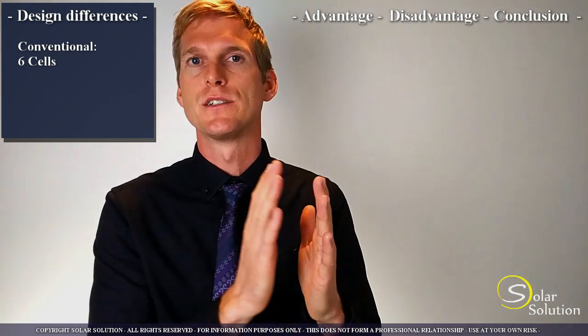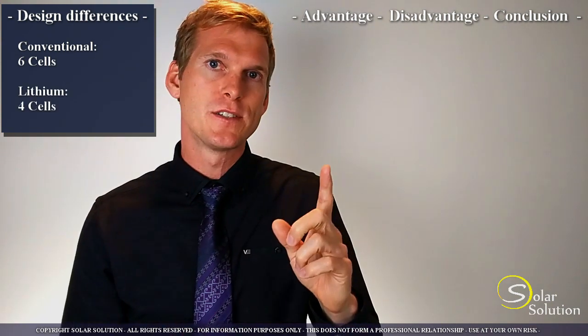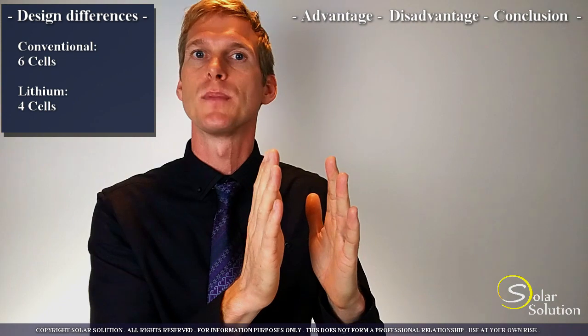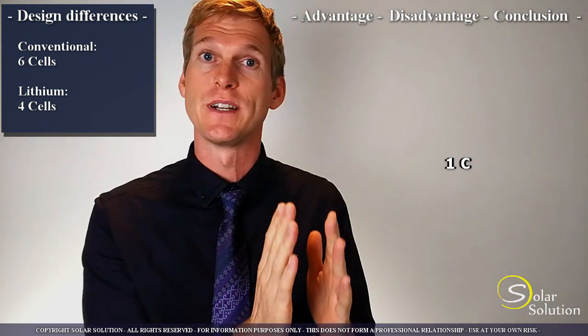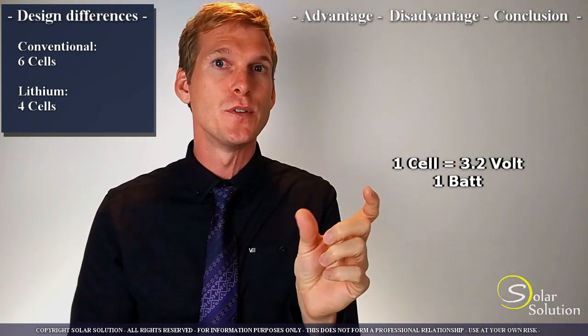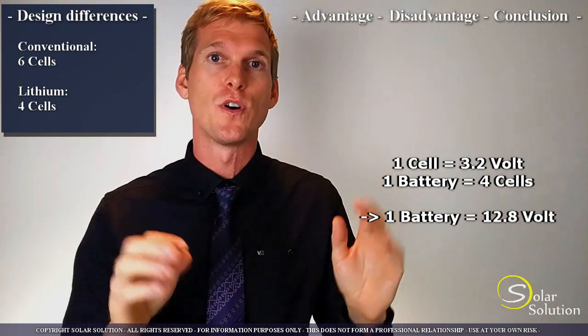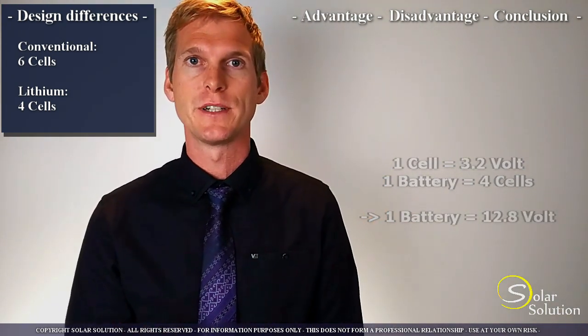A typical lithium battery consists of four different cells. Each cell consists of two different plates, a lithium base plate and a carbon base plate. They are submerged into an organic solvent and this one cell produces 3.2 volts. Place the four of them in series and you get 12.8 volts for a lithium battery.